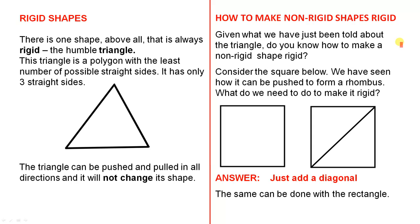How to make non-rigid shapes rigid. Given what we have just been told about the triangle, do you know how to make a non-rigid shape rigid? Consider the square below. We have seen how it can be pushed to form a rhombus. What do we need to do to make it rigid?